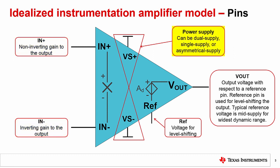VS plus and VS minus are the power supply pins that can be dual supply, like plus minus 5 volts, or single supply, like ground to 5 volts, or asymmetrical supplies, like minus 5 volts to plus 10 volts.